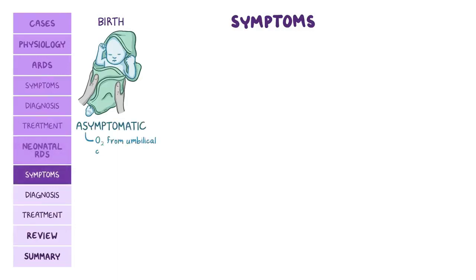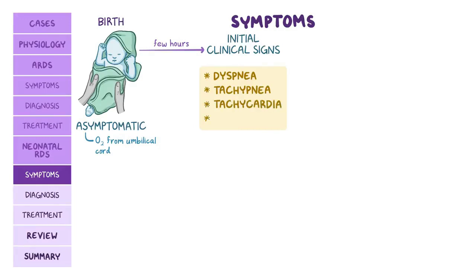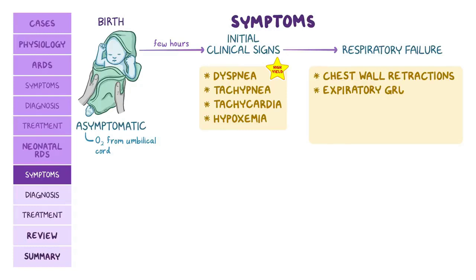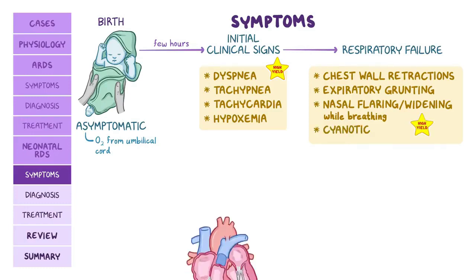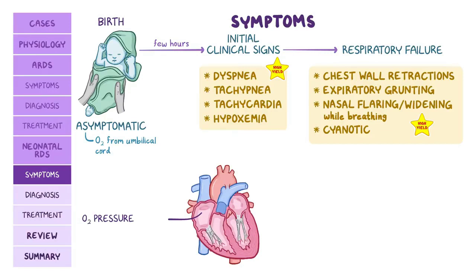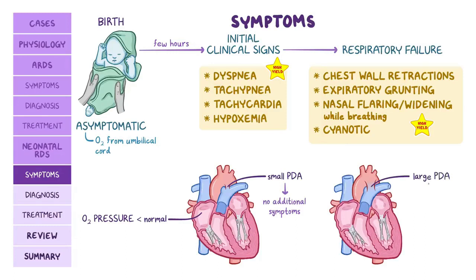At birth the newborn might be asymptomatic because they receive oxygen via the umbilical cord. A few hours later, initial clinical signs like dyspnea, tachypnea, tachycardia, and hypoxemia develop. Eventually respiratory failure manifests with chest wall retractions, expiratory grunting, and nasal flaring. The infant may become cyanotic. Because O2 pressure in the blood is lower than normal, the ductus arteriosus might not close; a large patent ductus arteriosus can lead to heart failure.